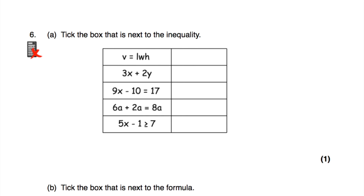Question number 6: tick the box next to the inequality. We're looking for greater than, less than, greater than or equal to, or less than or equal to symbols. Volume equals length times width times height is a formula. 3x plus 2y is an expression. 9x subtract 10 equals 17 is an equation. 6a plus 2a is always equal to 8a is an identity. And 5x subtract 1 is greater than or equal to 7 — that is an inequality, so I've ticked that box.